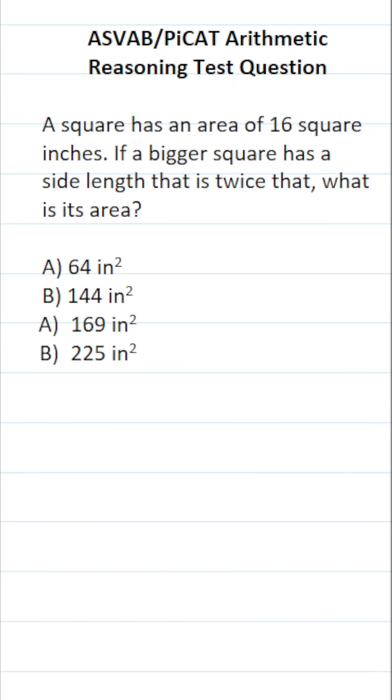This arithmetic reasoning practice test question for the ASVAB and PyCat says, a square has an area of 16 square inches. If a bigger square has a side length that is twice that, what is its area?